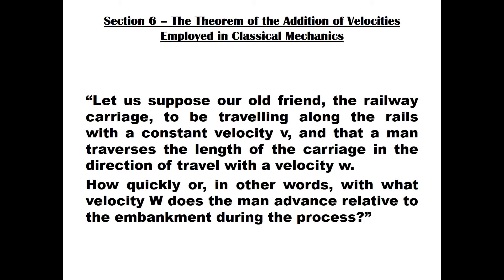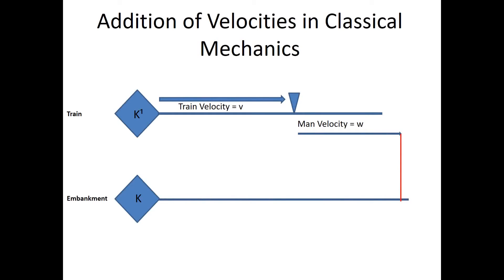Let us suppose the railway carriage to be travelling along the rails with a constant velocity V, and that a man traverses the length of the carriage in the direction of travel with a velocity W. With what velocity, capital W, does the man advance relative to the embankment during the process? According to the theorem of the addition of velocities employed in classical mechanics, the answer is quite simple: we add the velocity of the train V to the velocity of the man W. So capital W, the velocity of the man relative to the embankment, equals V plus W.